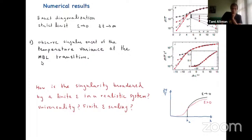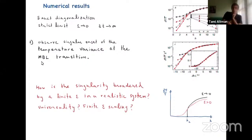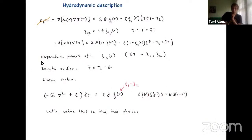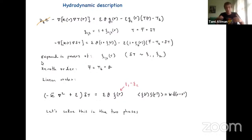We didn't have specific jump operators for the ED calculation — it was coupling to phonons. But for the next part, there is a specific concrete model with specific jump operators that I'll show. For the analytic understanding, we also show that the Lindblad description can at long wavelengths basically go to this kind of hydrodynamic equation. The hydrodynamic equation is very clear: this is the continuity equation, this is the energy current, this is the source term due to the hot bath, and this is an energy sink term due to the cold bath.